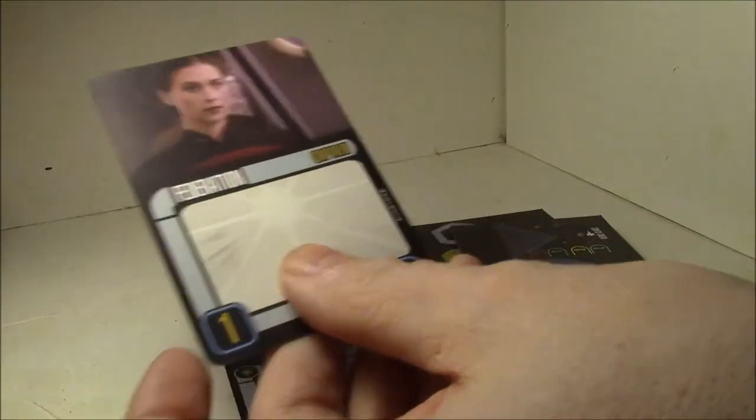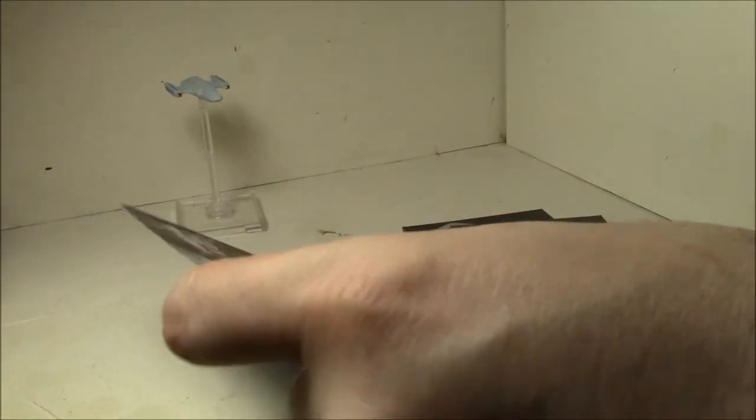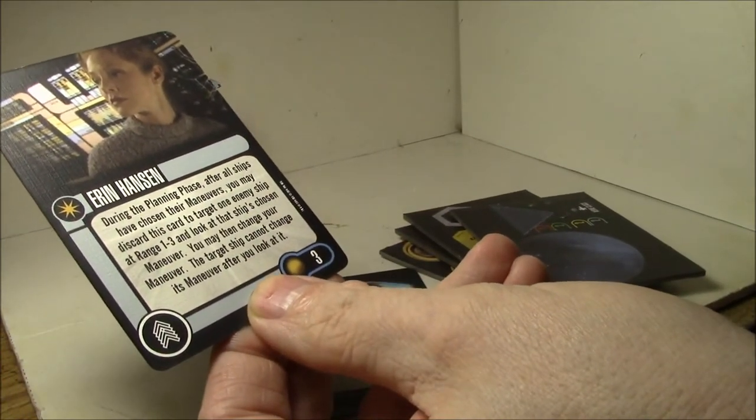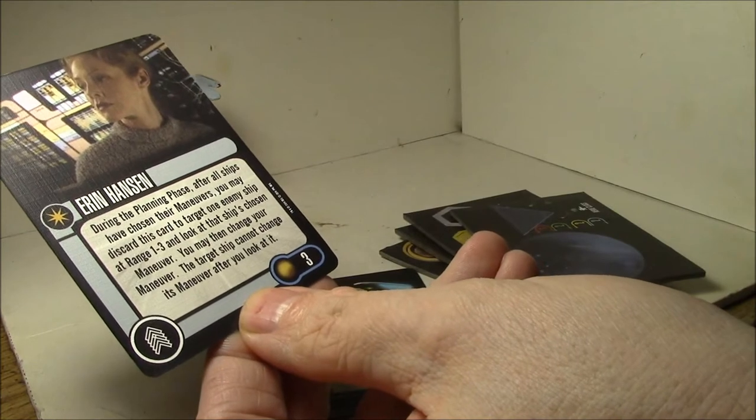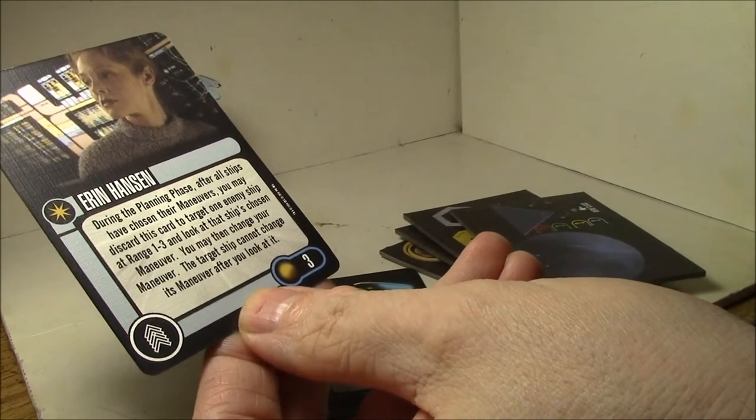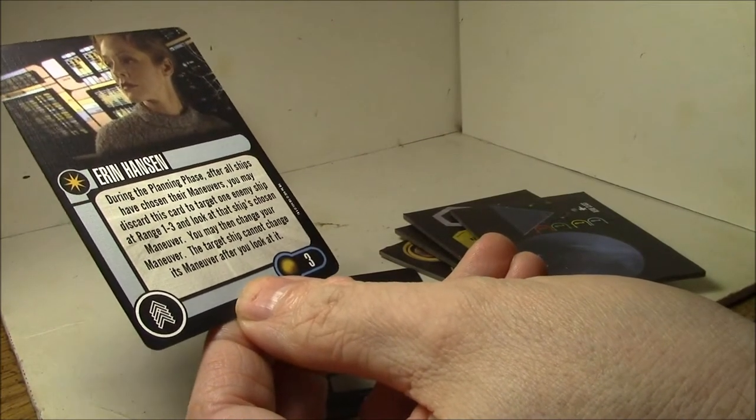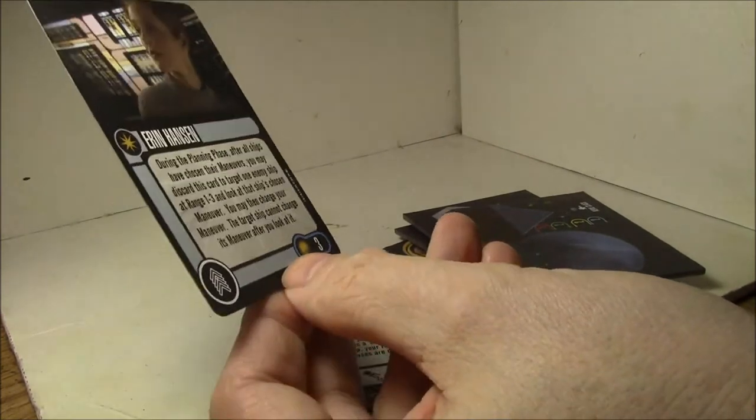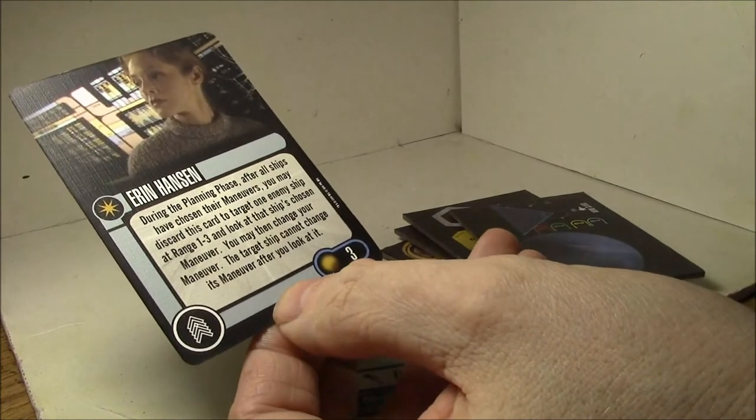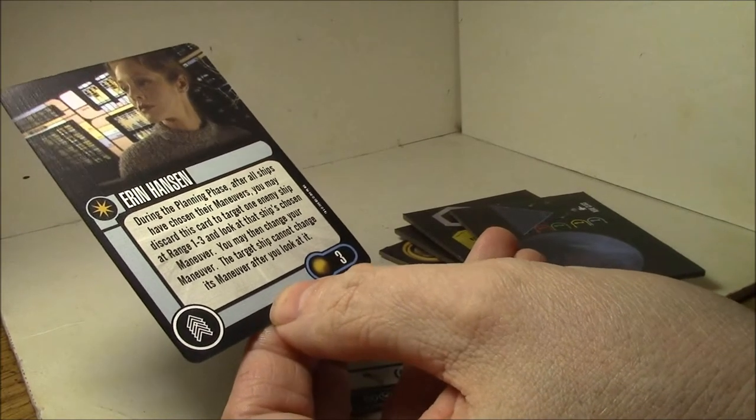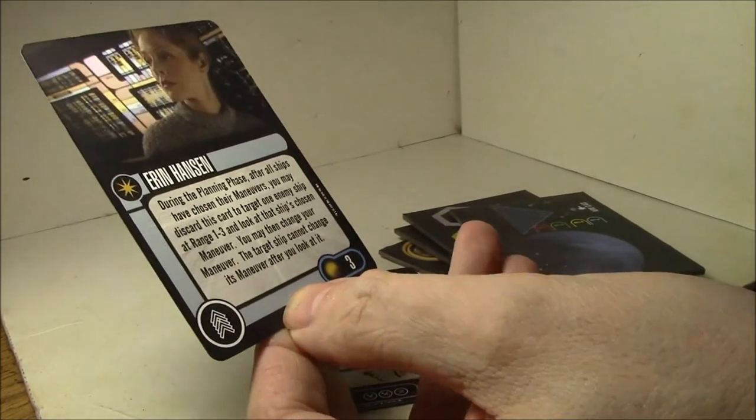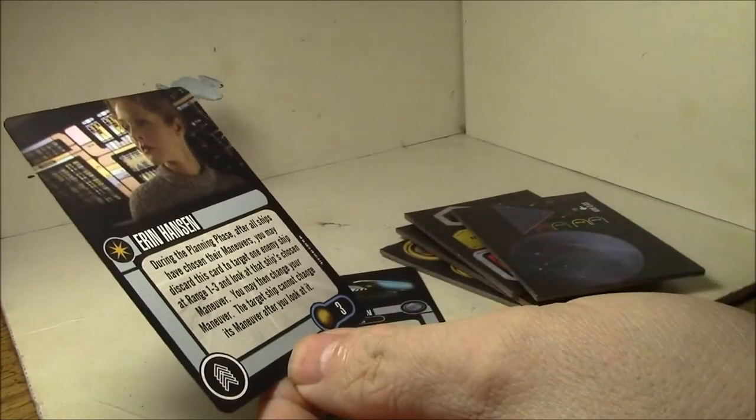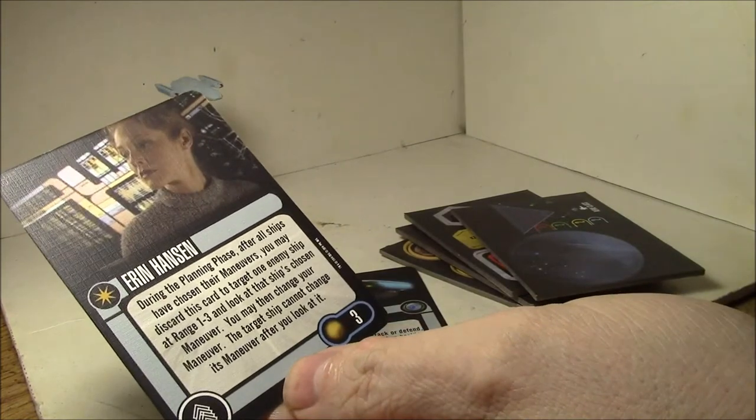Magnus Hansen. During the planning phase, after all ships have chosen their maneuvers, you may discard this card to target one enemy ship at range one to three and look at that ship's dial. You may then change your maneuver. This target ship cannot change its maneuver after you look at it. So three point Independent, discard. I really like the idea of that one-shot changing your maneuver thing because unless you're playing against Borg, having the right maneuver at the right time could really change the game dramatically. It's very good, point efficient, only three points.